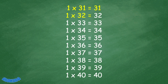1 x 32 equals 32, 1 x 33 equals 33, 1 x 34 equals 34, 1 x 35 equals 35, 1 x 36 equals 36, 1 x 37 equals 37, 1 x 38 equals 38, 1 x 39 equals 39.